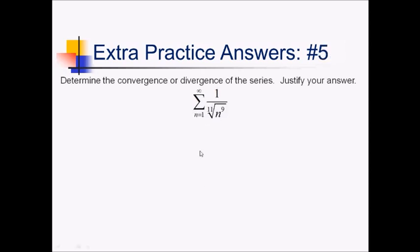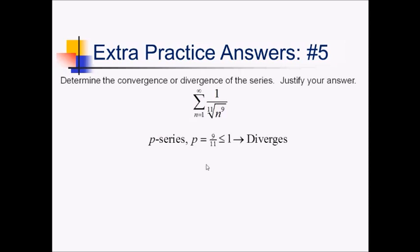On this problem, I notice I have a single radical term in the denominator with a 1 on top, so this seems like it's going to be a p-series problem. Using the p-series test: rewriting the exponent gives p = 9/11. Since that's less than or equal to 1, this will diverge by the p-series test.